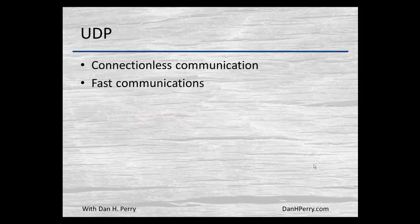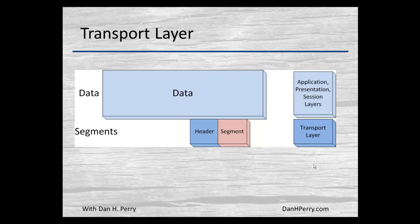UDP is a simpler protocol. It's connectionless, meaning it doesn't rely on two-way communications. It's very fast, but it's best-effort delivery — you send the data out and hope it's received at the other end. UDP is very good for things like streaming media, where losing an occasional packet isn't a big problem, but you need to make sure the transmission is very fast.